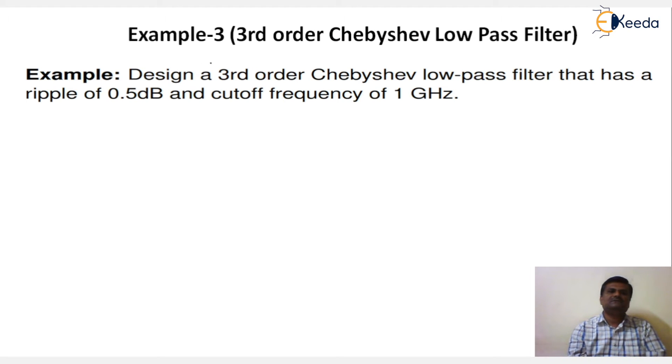Let us see the problem: Design a third order Chebyshev low pass filter that has a ripple of 0.5 dB and cutoff frequency of 1 gigahertz.